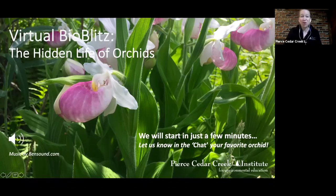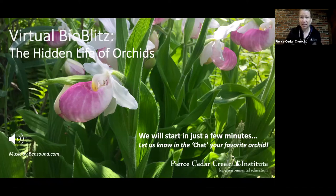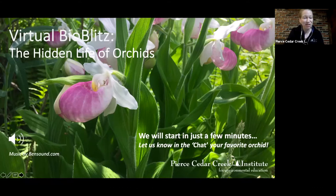Welcome everyone to our virtual bio blitz: the hidden life of orchids. Today we're going to talk about some of the characteristics you need to identify what an orchid is, a little about their life cycle, what their needs are, and then we'll go through groups of orchids. In Michigan we've got a lot of species, so I wanted to get to groupings. My name is Ellen Holsey, I'm the community program manager at Pierce Cedar Creek Institute.